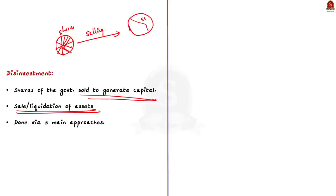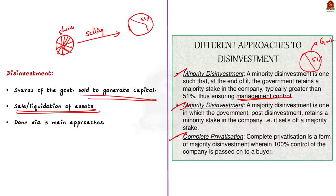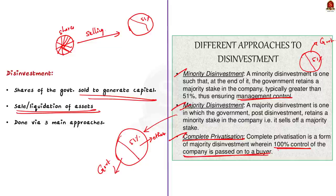In minority disinvestment, the government tries to preserve the majority stake in the company at around 51%, so the government retains control of management. In majority disinvestment, the government gives up the majority stake — the government's share will be less than 51% — meaning the government retains only a minority stake after disinvestment. The third approach is complete privatization — a type of majority disinvestment in which the company's entire ownership is transferred to a buyer, giving 100% control to the buyer.